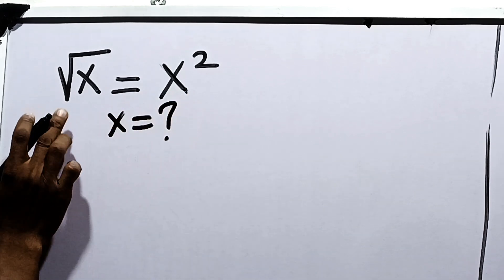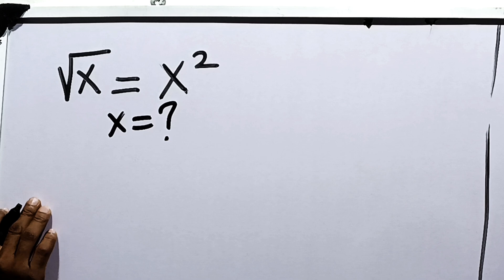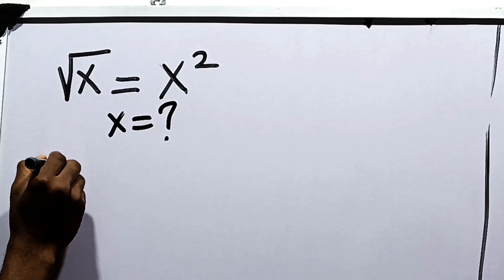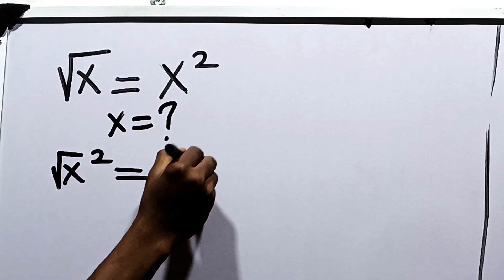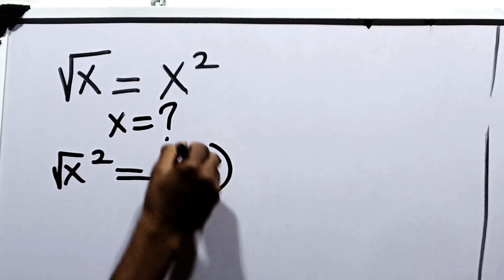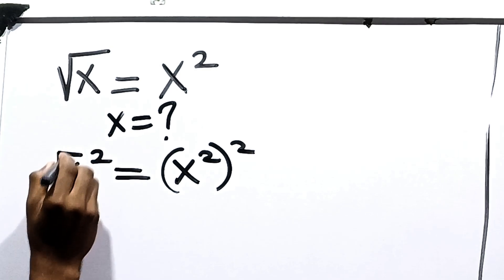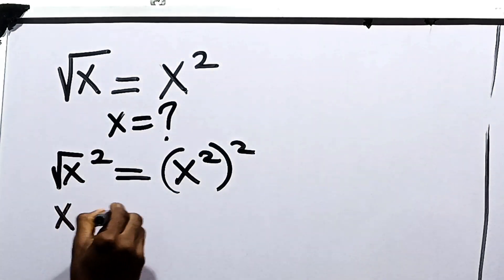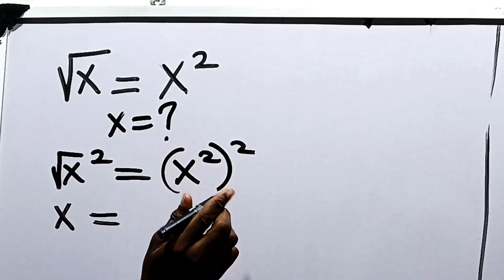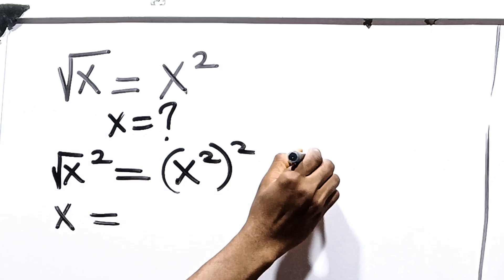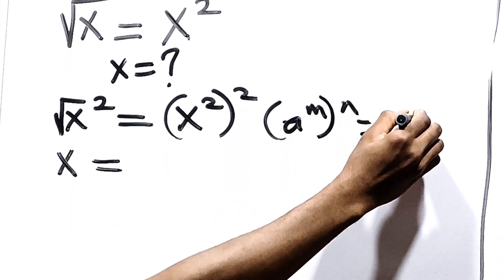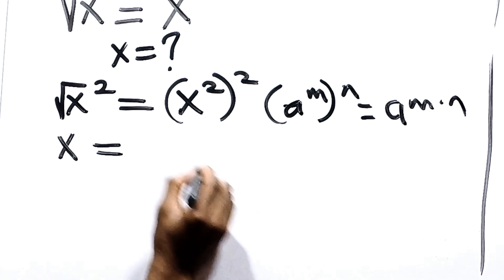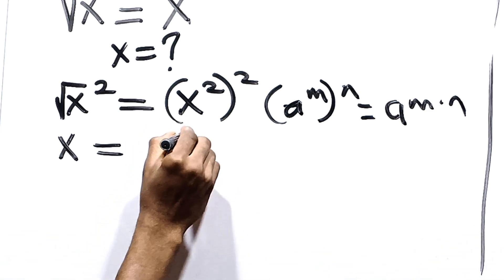First thing we're going to do here is square both sides. So if you square both sides, we have root of x squared is equal to x squared all squared. Root of x squared is x. When you have x squared squared, you can say that a raised to the power m all raised to the power n is equal to a raised to the power m multiplied by n. So we can say that this is x raised to the power 2 times 2, which is 4.